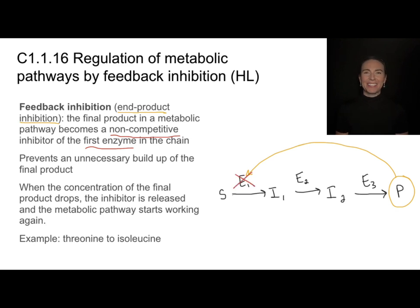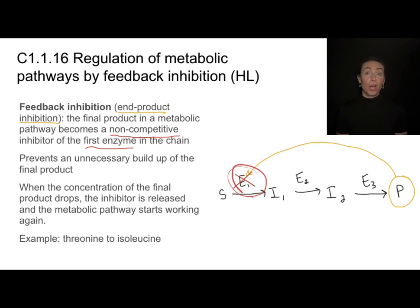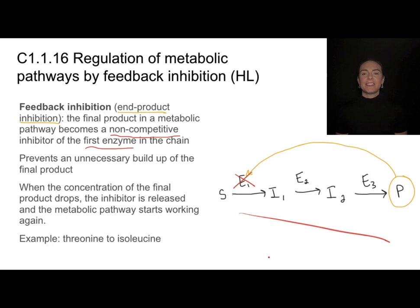If the first enzyme is inhibited, no substrate is converted into the first intermediate, so the entire enzyme chain shuts down. The threonine-to-isoleucine pathway is a classic example: threonine is an amino acid substrate that requires a series of enzymes to convert it to isoleucine. Once we have enough isoleucine, isoleucine becomes an inhibitor of the first enzyme in the chain, shutting down the entire pathway. When the concentration drops low enough, it pops off the enzyme and the chain starts again.